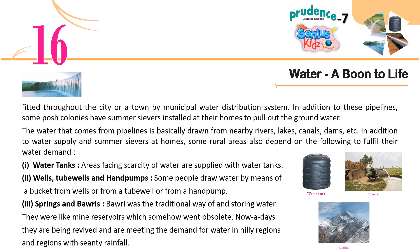1. Water Tanks: Areas facing scarcity of water are supplied with water tanks. 2. Wells, Tube Wells, and Hand Pumps: Some people draw water by means of a bucket from wells, or from a tube well, or from a hand pump. 3. Springs and Bavris: Bavri was the traditional way of storing water. They were like mini reservoirs which somehow went obsolete. Nowadays they are being revived and are meeting the demand for water in hilly regions and regions with scanty rainfall.